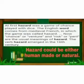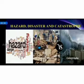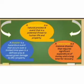Now we are going to see the difference between hazard and risk. At first, hazard was a game of chance played with dice. The English word comes from medieval French, in which the game was called hazard. Now chance or venture and risk or peril are the usual meanings of hazard. The verb hazard emerged in the 16th century. Hazard could be either human-made or natural in the environment. A natural hazard is a natural process and event that is a potential threat to human life and property.